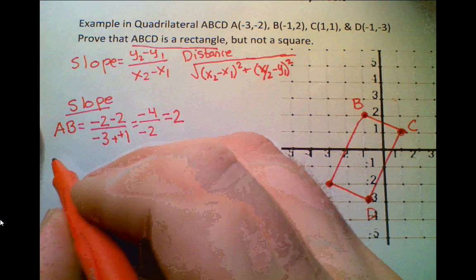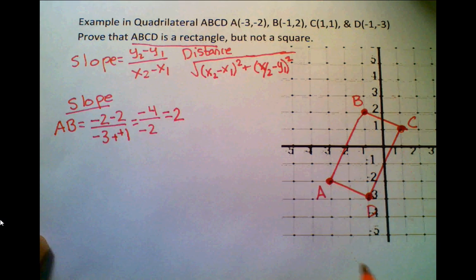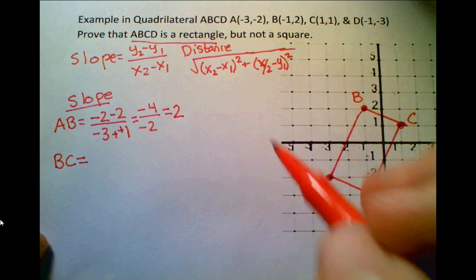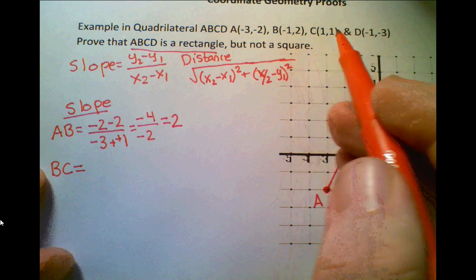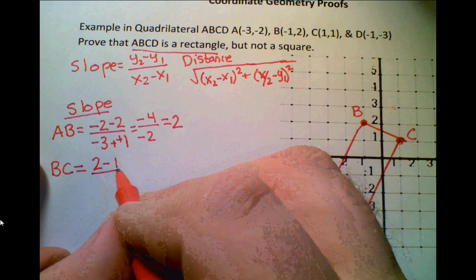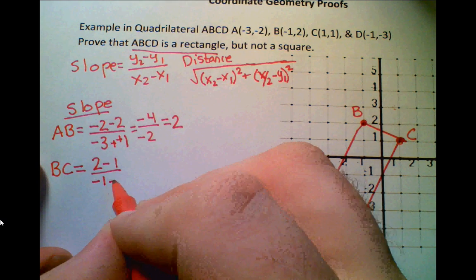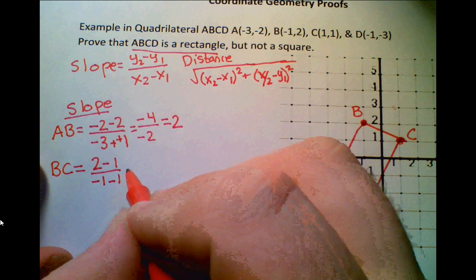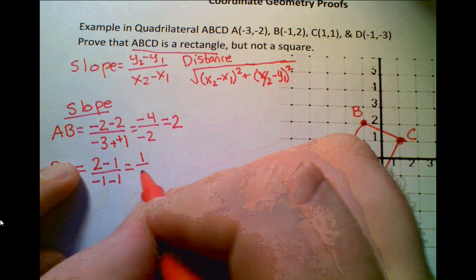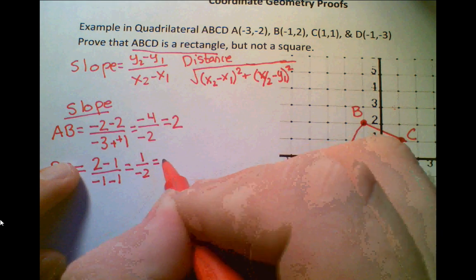Now, the slope of BC is equal to, take the difference of the y's, so I have to do 2 minus 1, all over -1 minus 1. And that's going to be equal to 1 over -2, which is equal to -1/2.